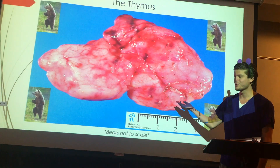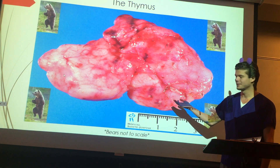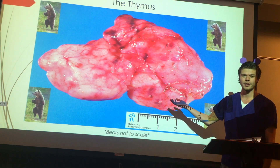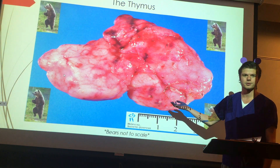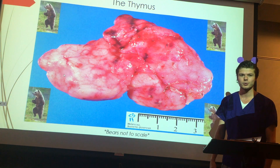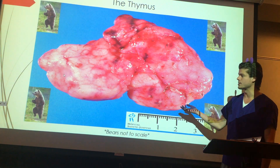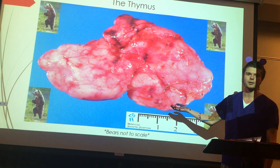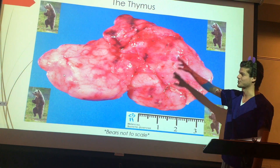This is the thymus. This is where T cells develop. It happens early on in life and around the age of 1 or 2 it starts to slowly turn into adipose tissue and go away. As you can see, it's the most beautiful organ that could possibly exist. It's very symmetrical.